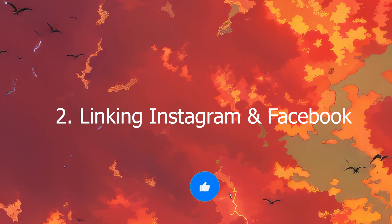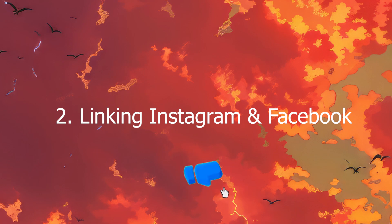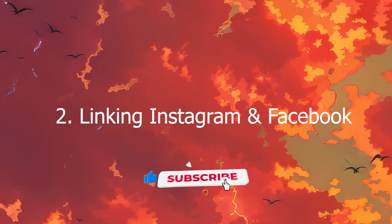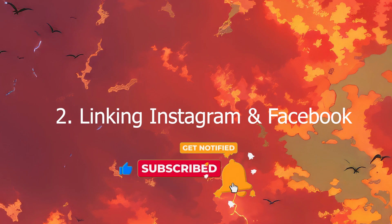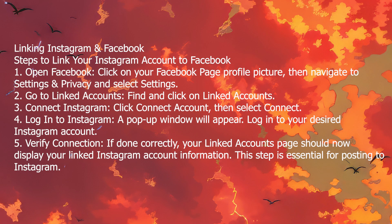Linking Instagram and Facebook. Now let's get to the good stuff — connecting your Instagram to Facebook. You'll need this connection to make everything run smoothly. Here's how you do it: open Facebook, head to Settings and Privacy > Settings > Linked Accounts, hit Connect, and log into your Instagram. Your Instagram should now be linked. Double-check that Instagram shows up on your Facebook page settings — this is mission critical. No link, no post.